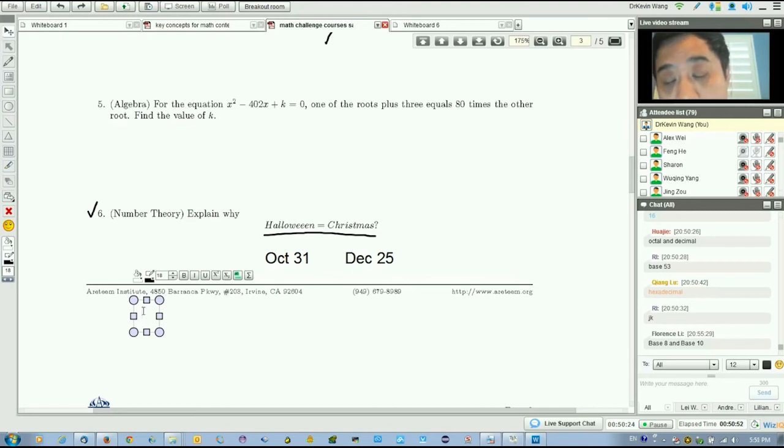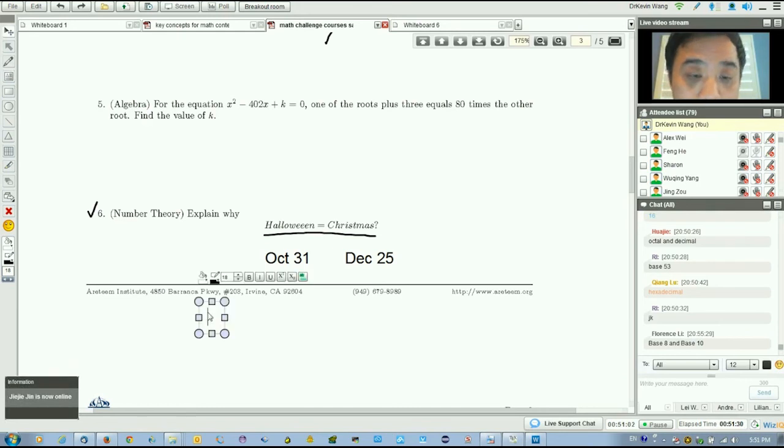Base 8 is important. Binary, base 2, is important because we use computers. Base 8 is a compromise between base 2 and base 10. Base 2 is just 0, 1, 0, 1—too hard for programmers. Base 10 is not easy to convert to base 2. Base 8 is easier to convert to base 2 and closer to base 10, so it's easier to recognize. It's usually used in computer programming.